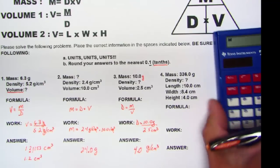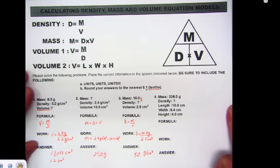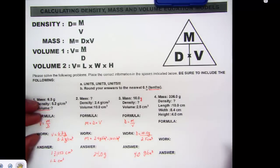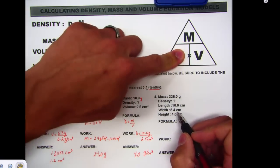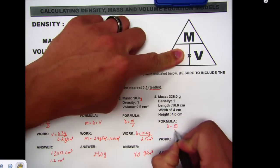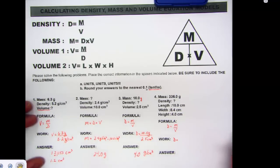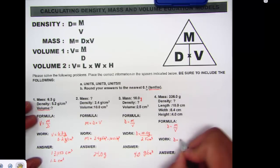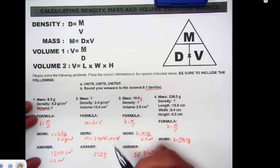Those are the easy, straightforward equations. However, you may encounter a problem that doesn't give you all the information directly. This last equation asks us to solve for density, so we cover up D — D equals M over V. Starting to fill in work: density equals 336.0 grams, but there's no volume given. This is where they might trick you.